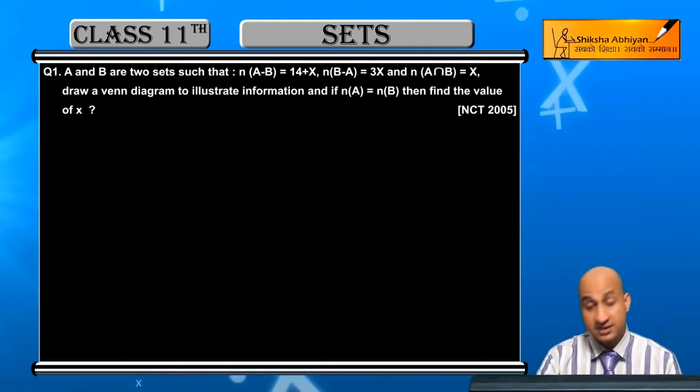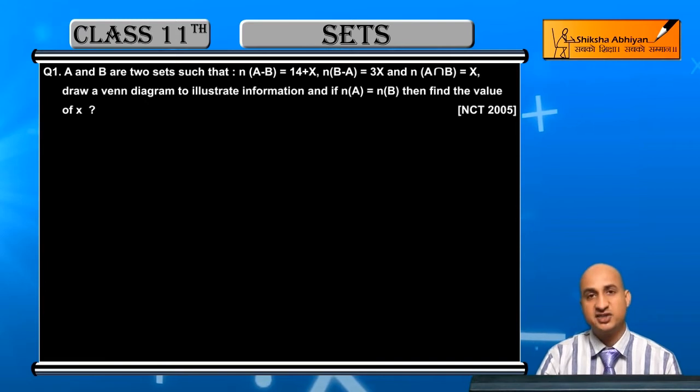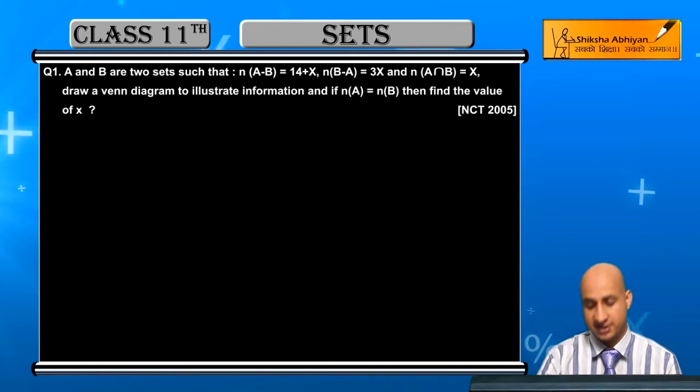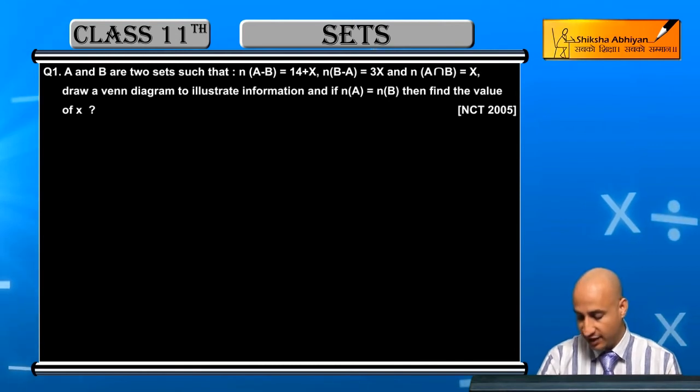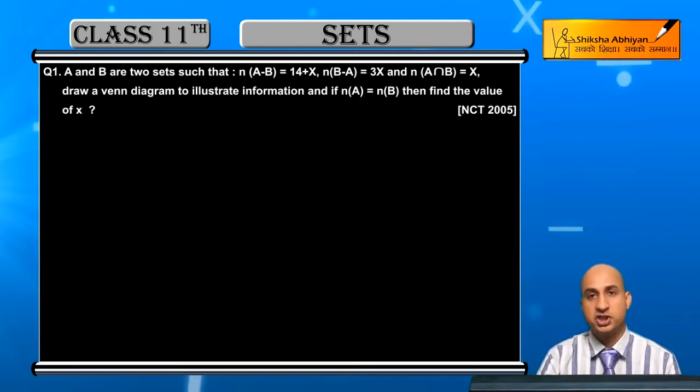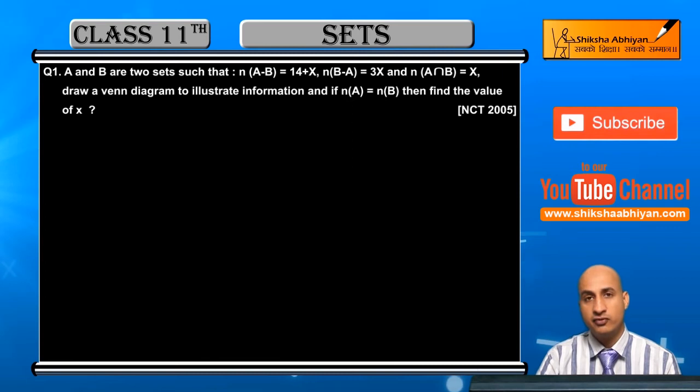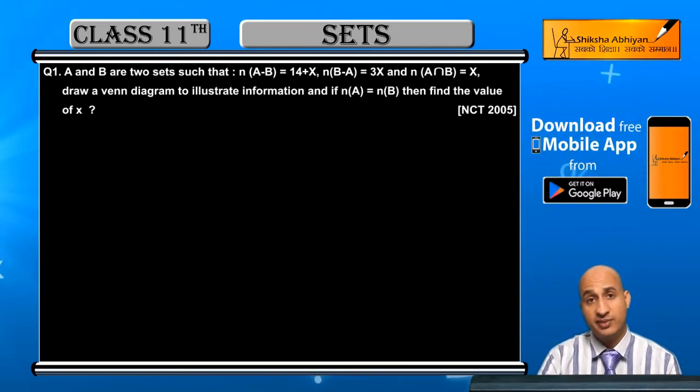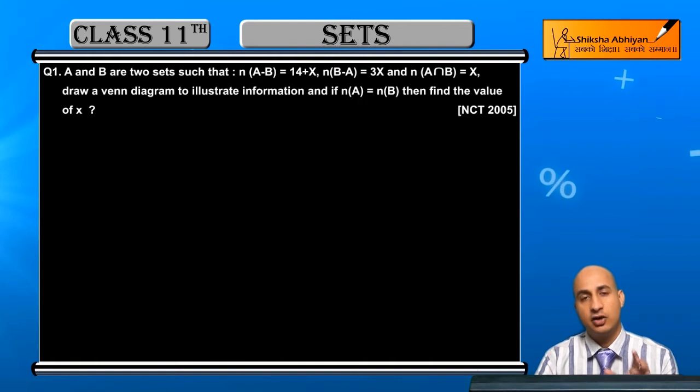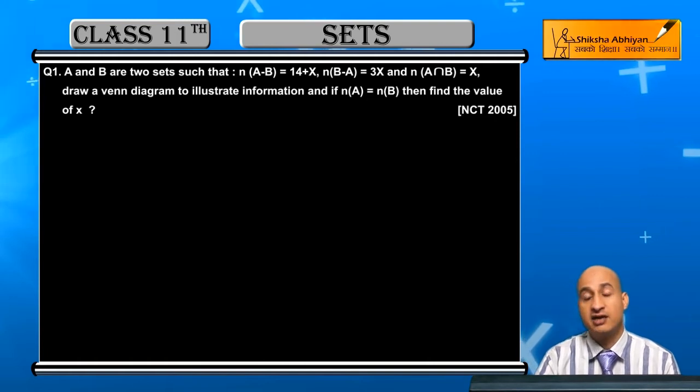The first question is: A and B are two sets such that n(A-B) = 14+x, n(B-A) = 3x, and n(A∩B) = x. Draw a Venn diagram to illustrate the information. If n(A) = n(B), then find the value of x.